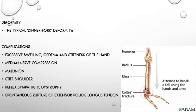The typical deformity is a dinner fork deformity due to dorsal angulation and displacement. Complications after a Colles or distal radius fracture include excessive swelling and stiffness of the hand. From the beginning, ensure patients move their fingers and elbow and incorporate edema management such as elevation of the hand above heart level. Also watch for median nerve compression and malunion of the fracture. If the patient is incorrectly immobilized in an arm sling, a stiff shoulder can occur.